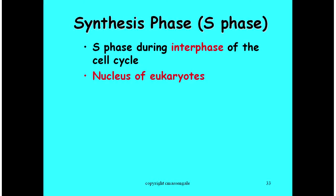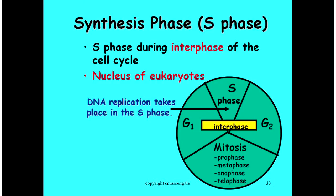DNA replication takes place in the nucleus of eukaryotic cells. Obviously it wouldn't take place in the nucleus of prokaryotic cells since they don't have one — it would take place in the cytoplasm. For number 34, please write in nucleus.